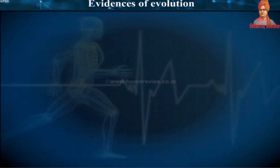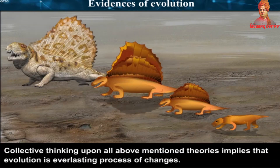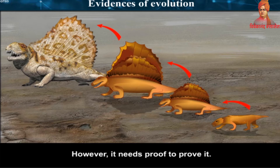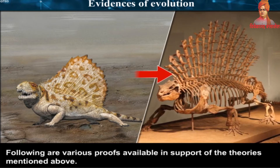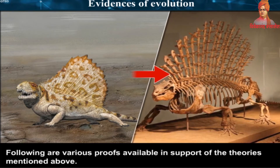Evidences of Evolution. Collective thinking upon all these theories implies that evolution is an everlasting process of changes. However, it needs proof to support it. Following are various proofs available in support of the theories mentioned above.